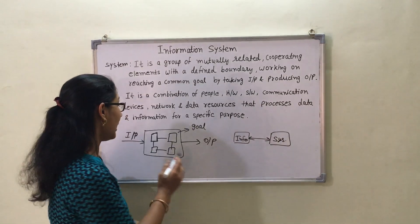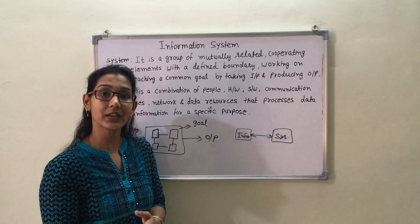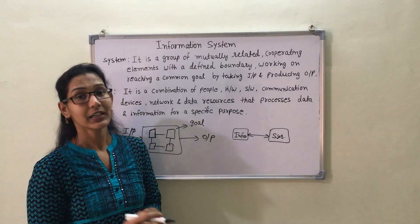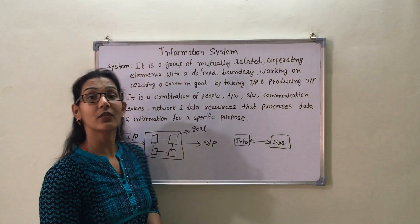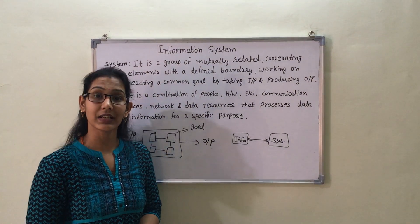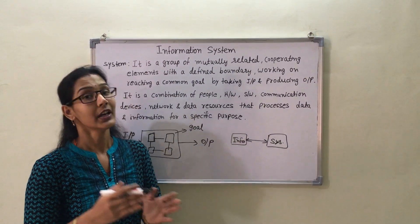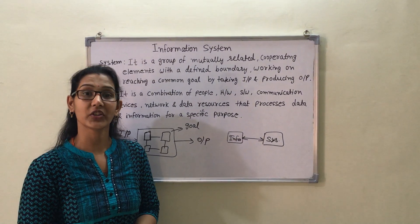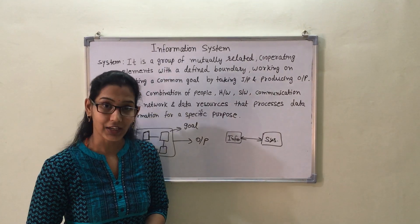The system transfers the processed data into output as information and sends it to other users via the network. The main purpose of an information system is to convert data into information, which is meaningful and useful.